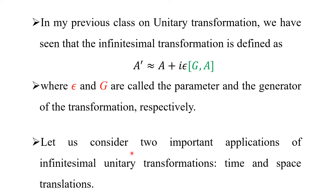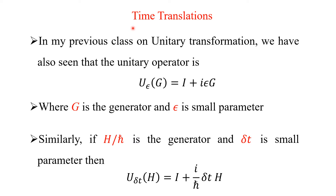Now let us consider two important applications of infinitesimal unitary transformation — that is time and phase translation. We will first see about time translation. In the previous class on unitary transformation we also saw that the unitary operator U(epsilon), as a function of g, is equal to the unit operator plus i·epsilon·g. Here g is the generator of the transformation, and epsilon is a small parameter. So we assume that this translation is infinitesimally small.